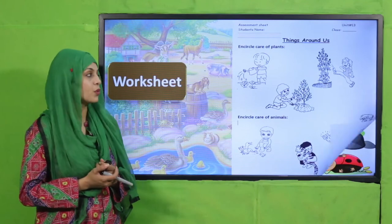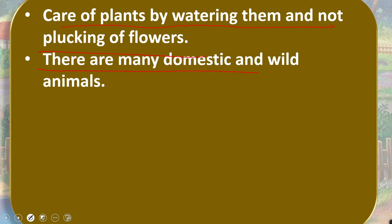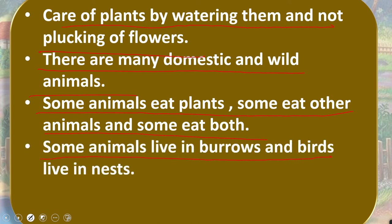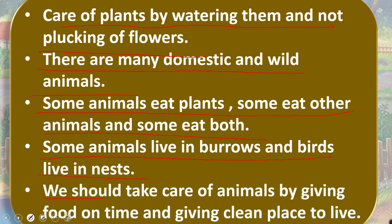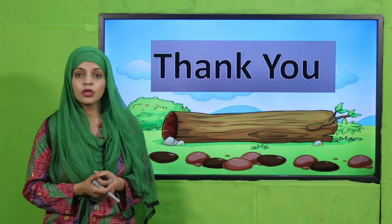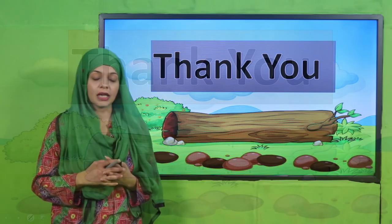To wrap up: all students should now know that we care for plants by watering them and not plucking them. There are many domestic and wild animals. Some animals eat plants, some eat other animals, and some eat both. Some animals live in burrows like rabbits, and birds live in nests. We should take care of animals by giving them food on time and a clean place to live. I hope you have enjoyed this unit and learned a lot. Keep everybody around you safe. Have a good day, thank you so much, and Allah Hafiz.